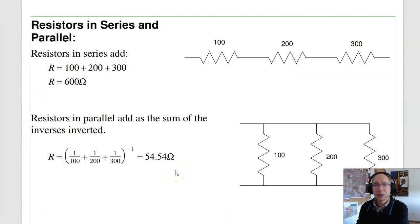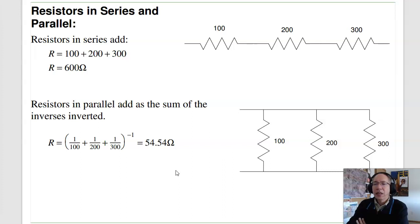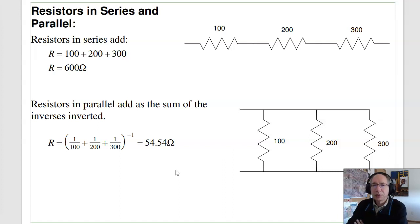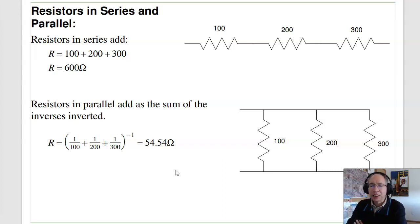Starting out, if you have a resistor circuit, resistors in series add — so 100 in series with 200 in series with 300 is 600 ohms. In parallel, the inverses add. So the resistance of 100 in parallel with 200 and 300 is 1 over 100 plus 1 over 200 plus 1 over 300, inverted.